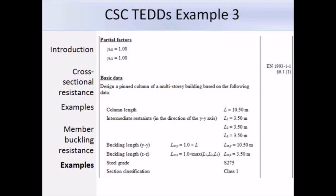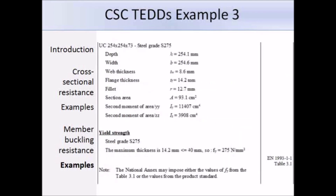The steel grade is S275 and the section is class 1. The listed section properties include depth, width, web and flange thicknesses, root radius, section area, and second moment of area about both axes.